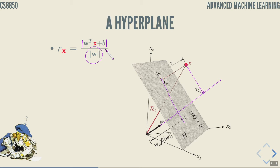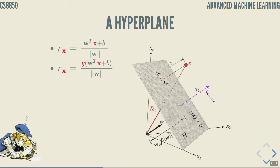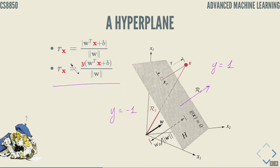That distance is computed by projecting x onto the normal of the hyperplane and normalizing by the length of the normal vector w; the bias gives the shift. Since we're computing distance, we take the absolute value — we don't care which side the point is on. Equivalently, we can replace the absolute value using the label for the point: points on the positive side have label +1, points on the negative side have label −1, and for correctly classified points this expression is always positive.